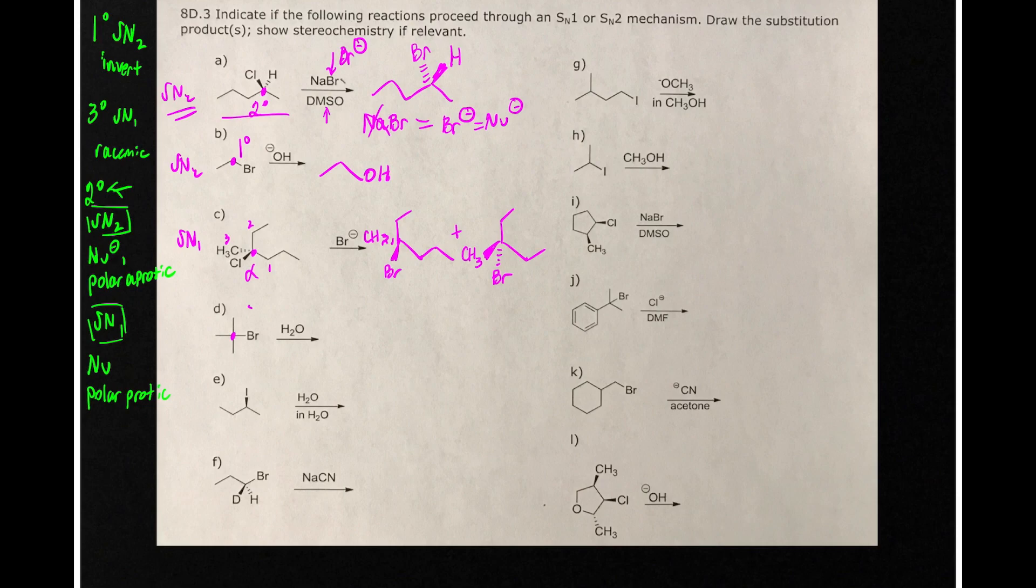In part D, this is a tertiary alkyl halide. We know that's going to be SN1. And so we draw the reaction products here. There's no stereochemistry, so we don't need to worry about that there.